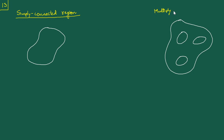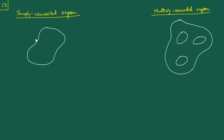A cross-section with holes would be referred to as a multiply connected region. These definitions become much more mathematically rigorous in three dimensions, but that is not our concern here. The key distinction is that a simply connected region has only one periphery, as opposed to a multiply connected region which has multiple peripheries — an outer periphery and multiple inner peripheries.